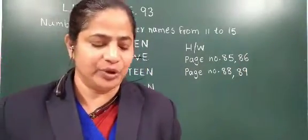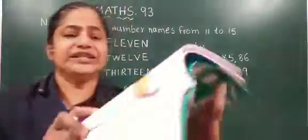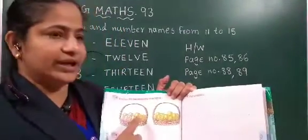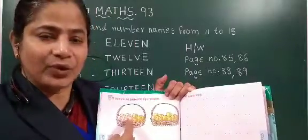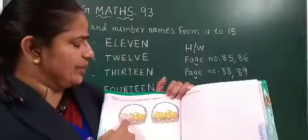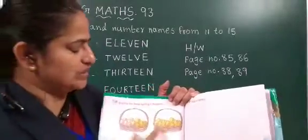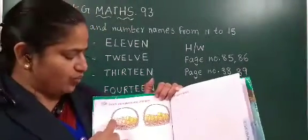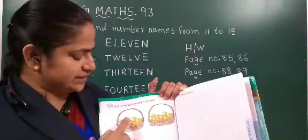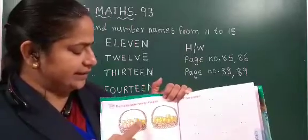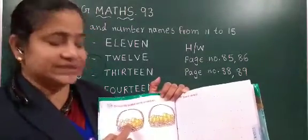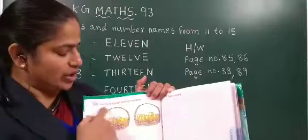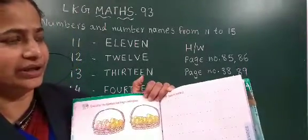On page number eighty-eight, yeh encircle the basket having eleven mangoes. Aap log on page number eighty-eight mein dho basket of mangoes diya hai. Konsi basket mein eleven mangoes hain, yeh aapko circle lagana hai. We will count: one, two, three, four, five, six, seven, eight, nine, ten, eleven. First basket mein eleven mangoes hain — first basket pe aapko circle lagana hai.